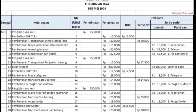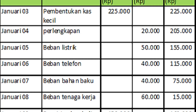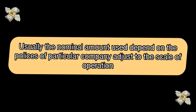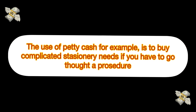As I said before, petty cash is used for relatively small expenses. The overall map of petty cash is the nominal amount that has been determined by the company's management in a short or limited amount. Usually, the nominal amount used depends on the policy of the particular company, adjusted to the scale of operation. The use of petty cash, for example, is used to complement stationery needs if you have to go through a procedure.